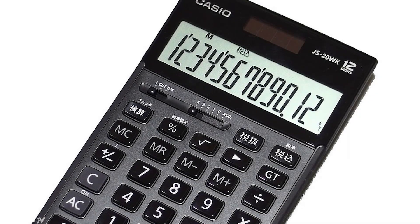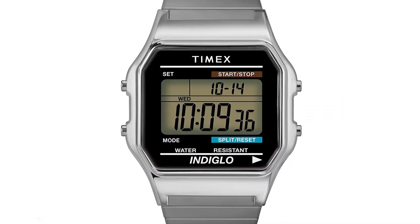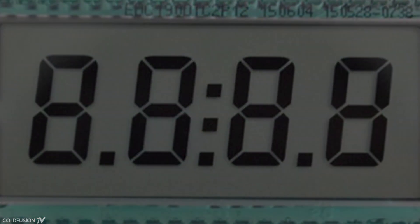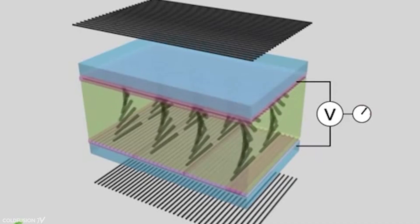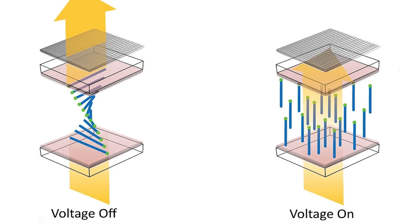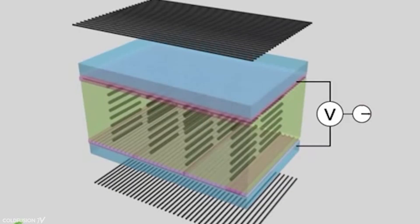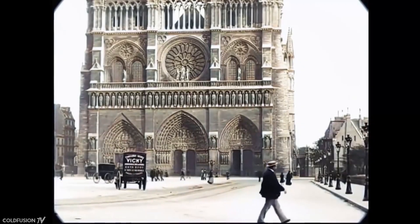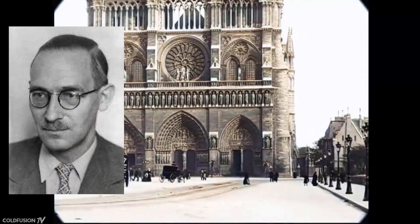If you've ever looked at a calculator display, or an old watch face from the 80s or so, you would have seen a low power liquid crystal display, or LCD, at work. The way these function is actually pretty interesting. They work on a principle called the twisted nematic effect. Basically, an electric field is used to align special liquid crystal molecules between two states. When the molecules are not aligned and twisted, it's an off state. But when a low voltage is applied, they line up and form an on state. By manipulating this effect, you can form basic numbers and letters. The twisted nematic effect was first noticed by a French physicist, Charles Victor Mauguin, in 1911.